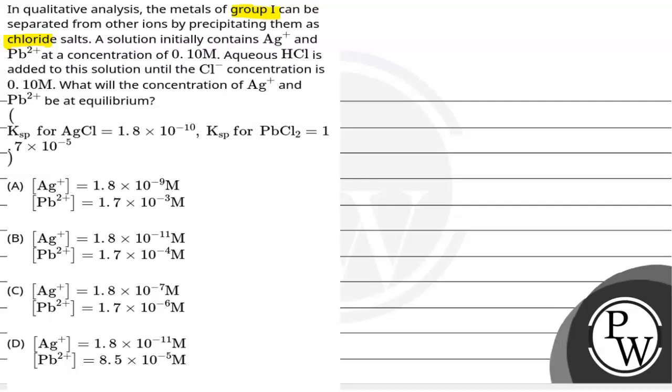A solution initially contains Ag+ and Pb2+ at a concentration of 0.10 M. Aqueous HCl is added to this solution until the Cl- concentration is 0.10 M.